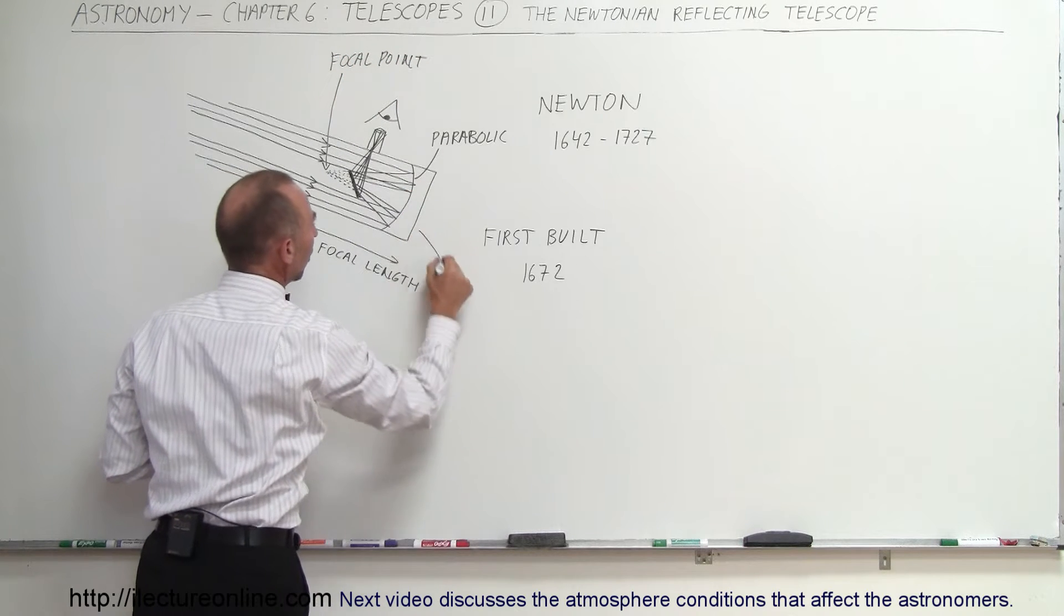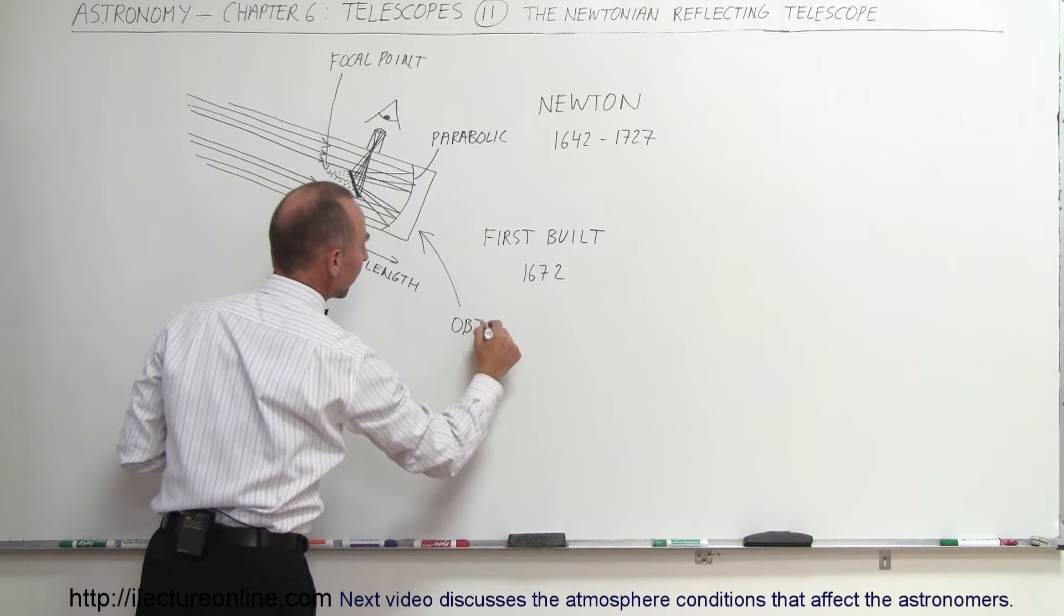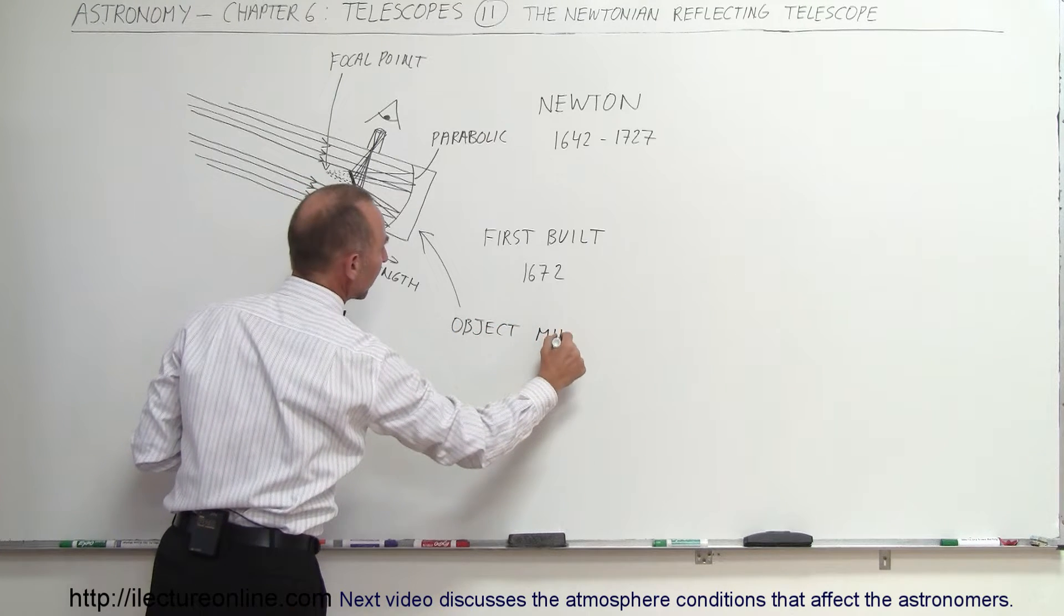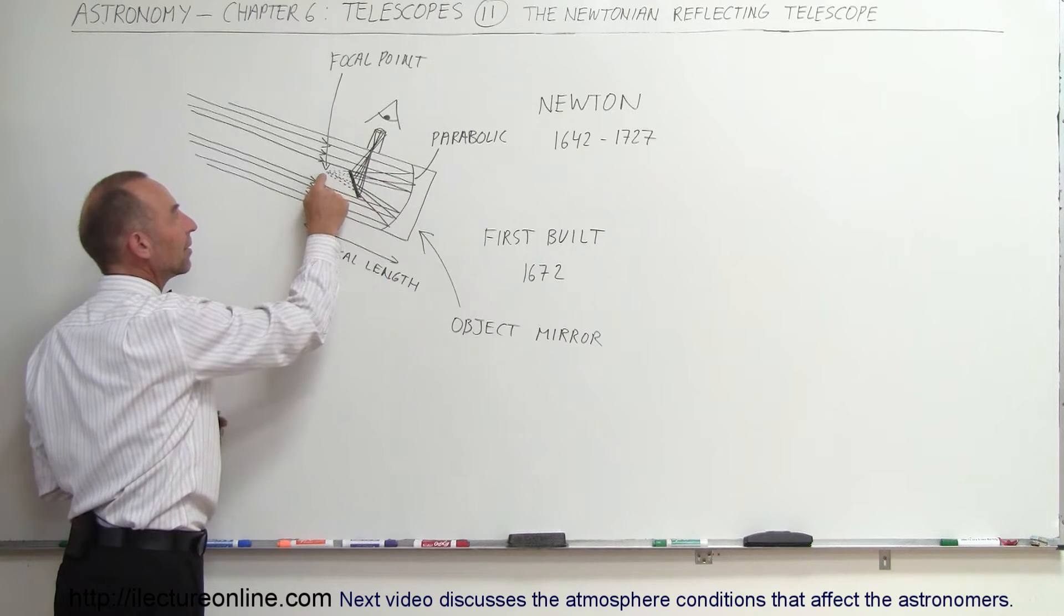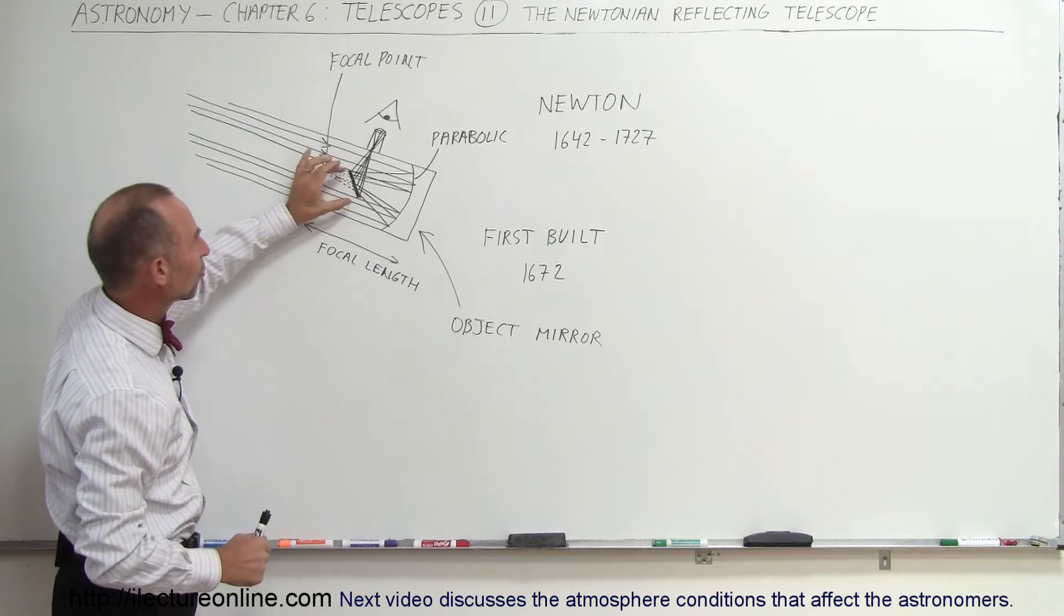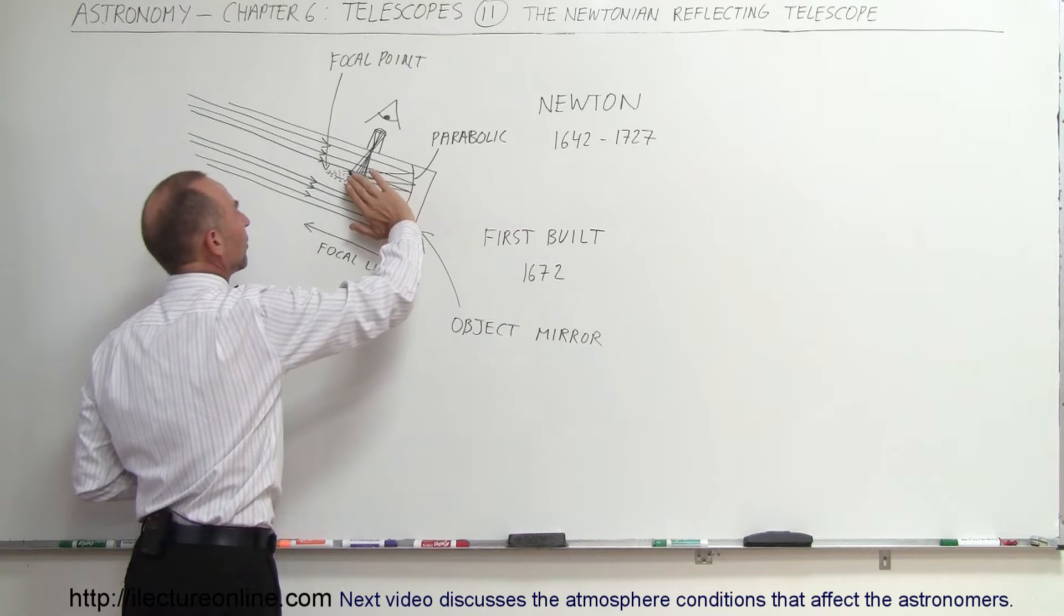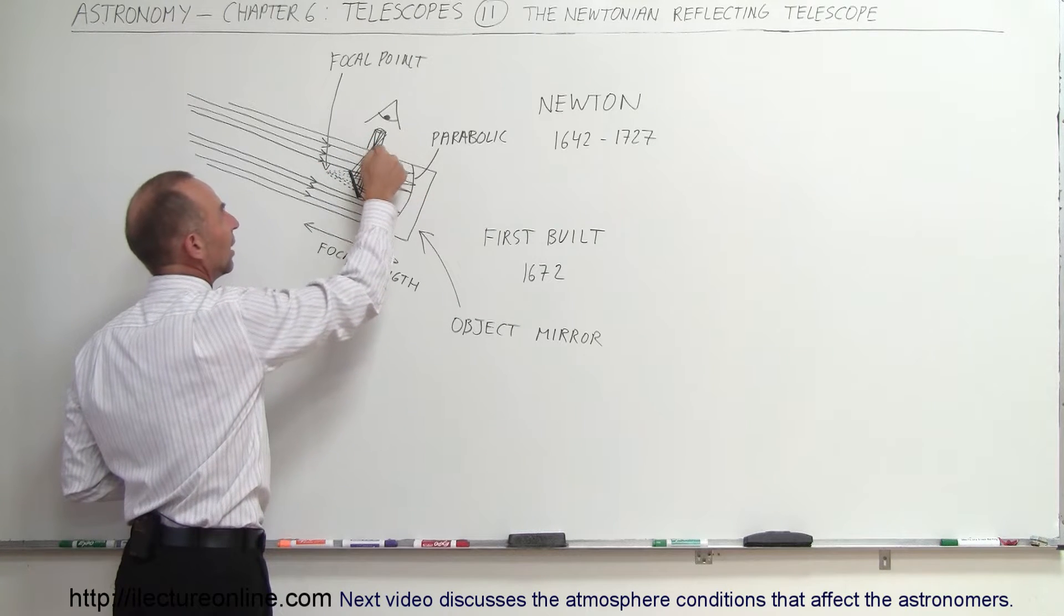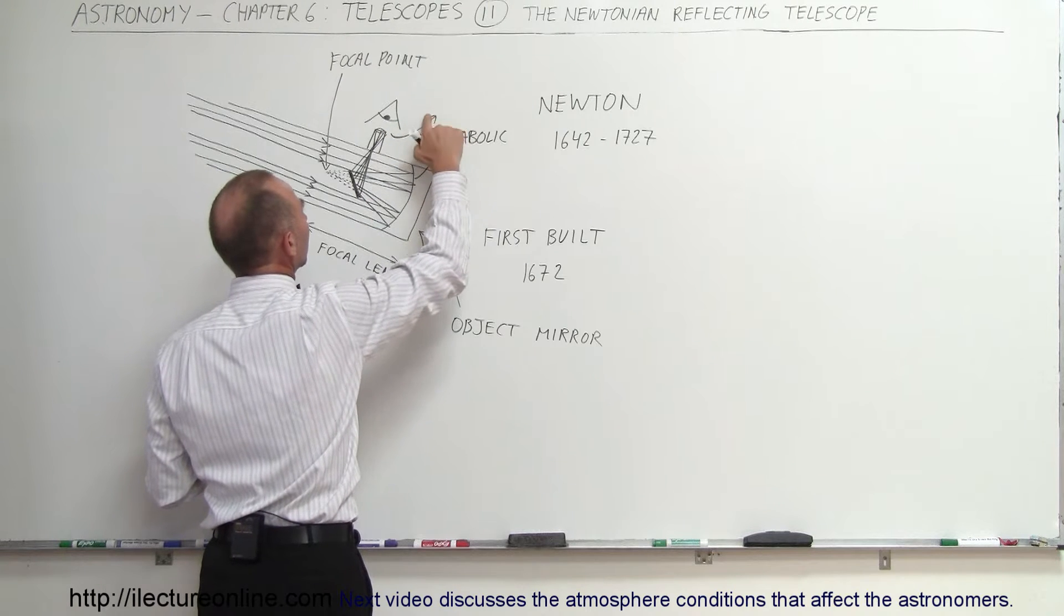And this here is called the objective or the objective mirror in this case. So objective mirror, it's not a lens. And so the light would then be reflected back, but before it came together here at the focal point, you would put a mirror in its place, a small mirror at an angle, so the light rays that reflect would bounce off the mirror, reflect in this direction, and then finally with a small eyepiece over there, you would then look at the telescope in that direction.